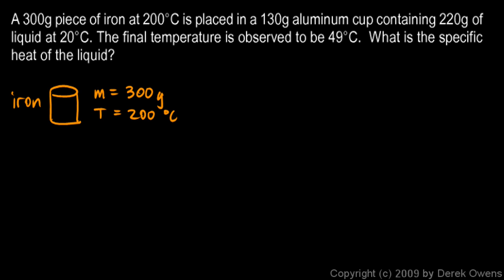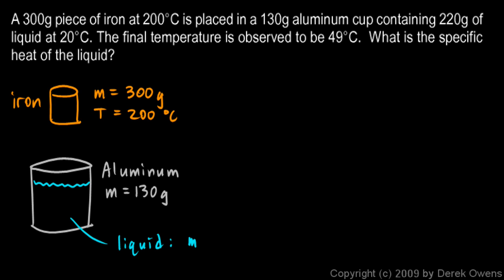It's placed in a 130 gram aluminum cup. So here's the aluminum, and for the aluminum, the mass is 130 grams and it contains 220 grams of liquid at 20 degrees Celsius. So here's the liquid inside. The liquid has a mass of 220 grams, and we're told the liquid is at 20 degrees Celsius, so the temperature there I write is 20 degrees Celsius.